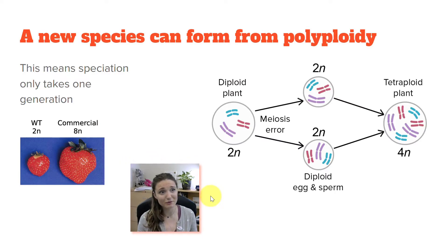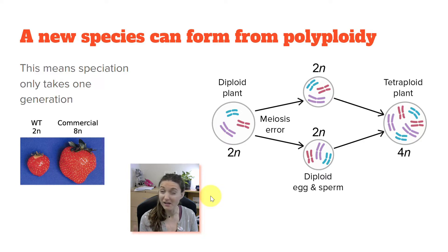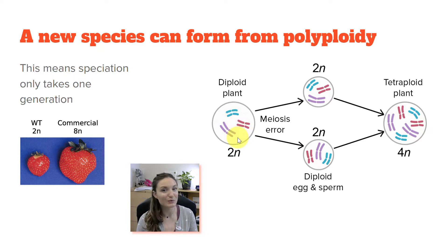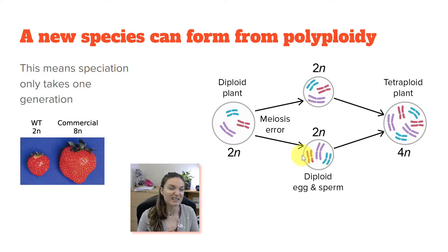Sometimes we get new species forming basically in one generation through what we call polyploidy, most often happening in plants. This is when a diploid plant parent — having two copies of each chromosome — experiences an error during meiosis where sister chromatids do not separate. So they make gametes that are still diploid. In meiosis we're supposed to go from diploid to haploid, but sometimes plants make an error and their gametes stay diploid.